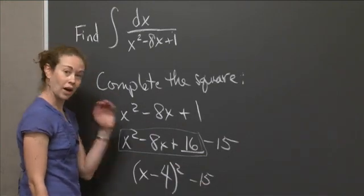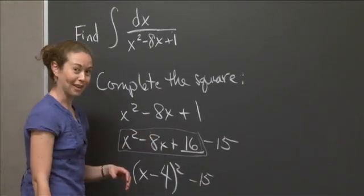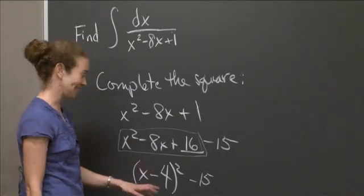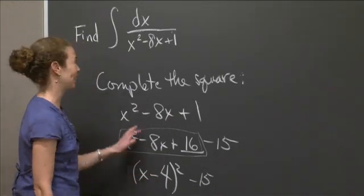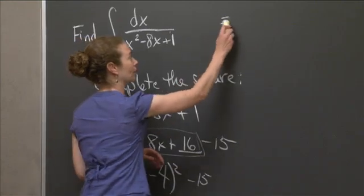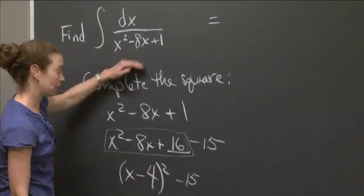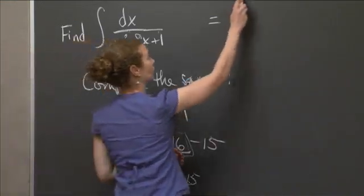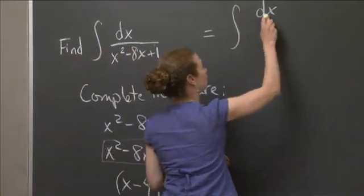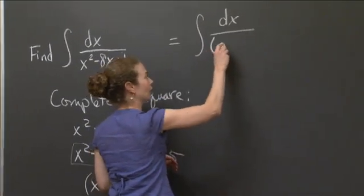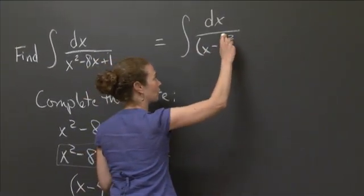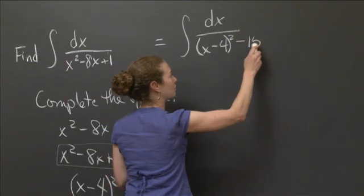And so what I've done is I've added 15 and subtracted 15. And then I put this plus 16 into here. x minus 4 quantity squared is exactly these first three terms. And then I keep the minus 15.